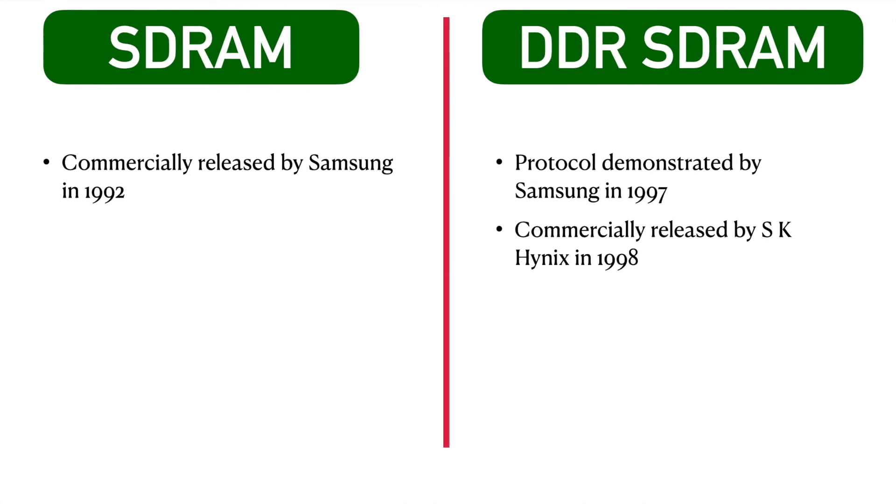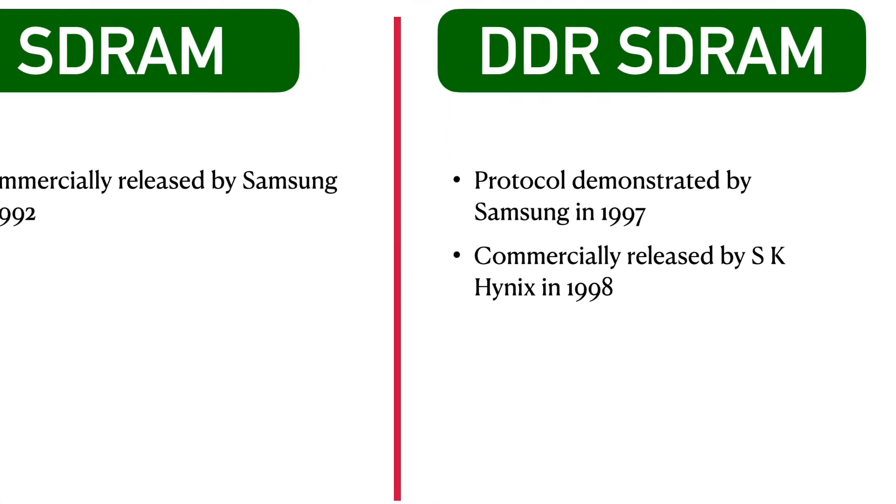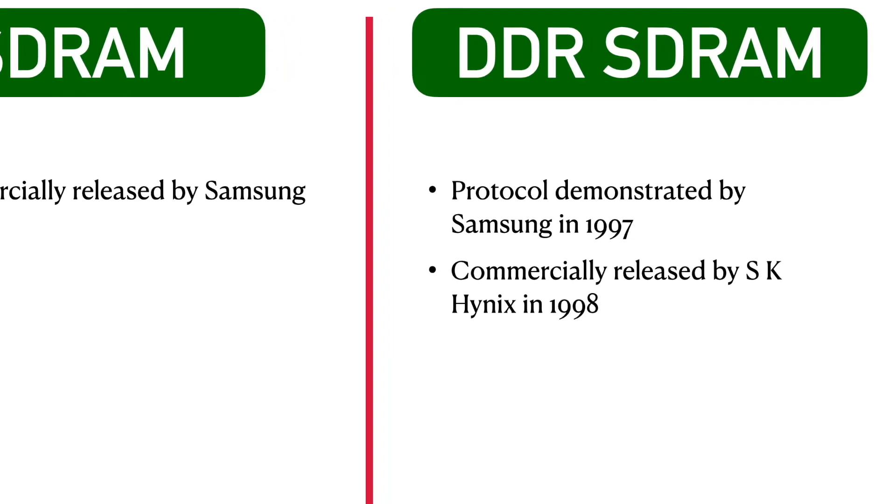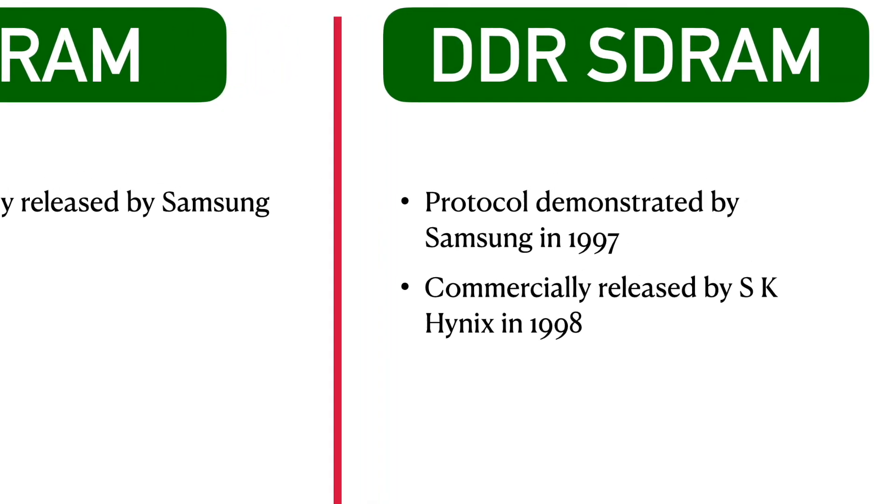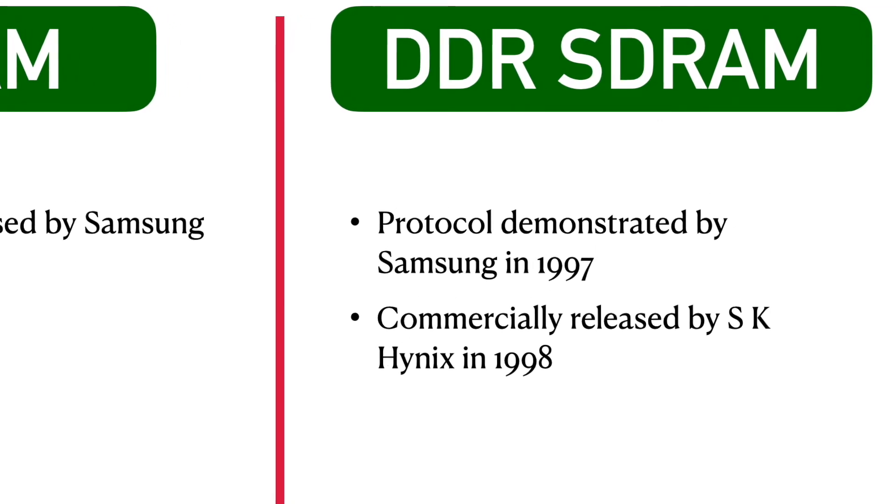Samsung had demonstrated double data rate synchronous dynamic RAM prototype in 1997. And later in 1998, 64 megabytes of DDR SDRAM was commercially released by Hyundai Electronics, which is now known as SK Hynix.